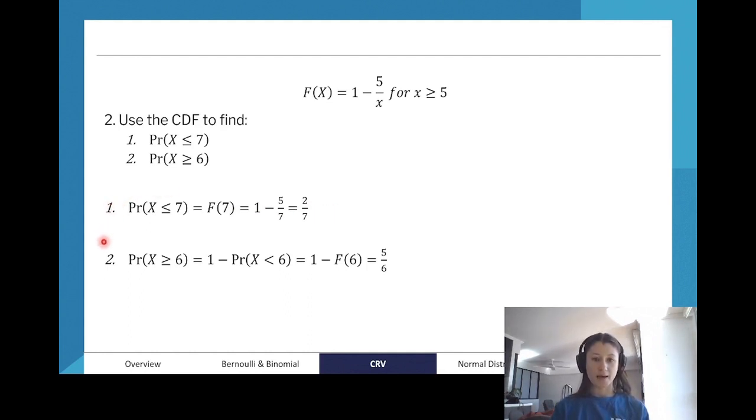And then, to find the probability that X is greater than 6, this is the opposite of what we want, because usually our CDF tells us the value is less than a certain value. So what we want to do here is invert it, use our 1 minus trick. So we get 1 minus the function of 6.